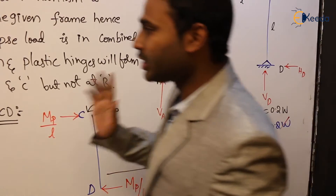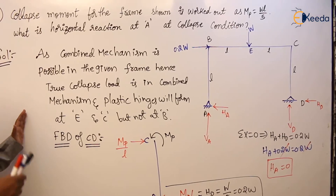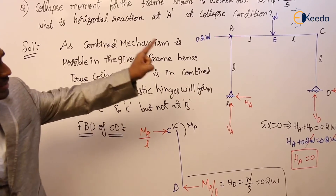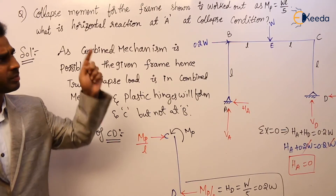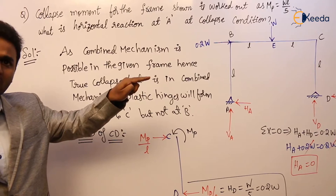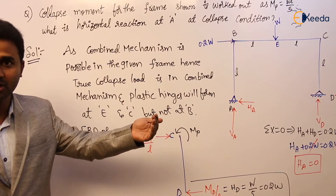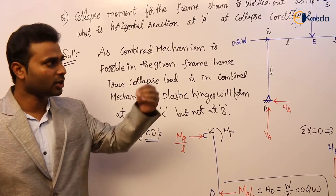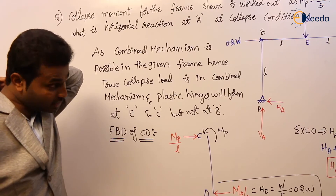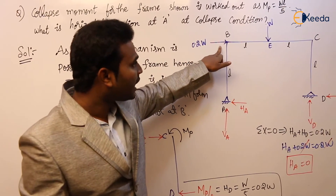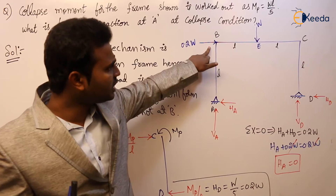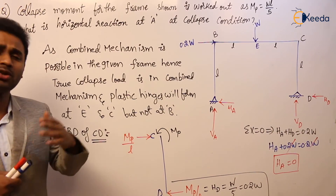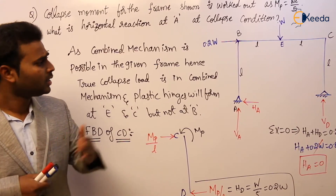For the examination, directly observe that the frame will sway, which means beam mechanism and sway mechanism are both possible, so combined mechanism is also possible. The true collapse is in combined mechanism. Since it is swaying to the right, at B the plastic hinge will not form. The hinges will form at E and C only. Wherever the plastic hinge forms, the plastic moment MP will develop.